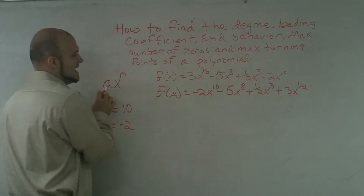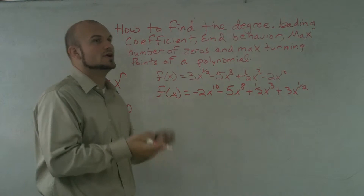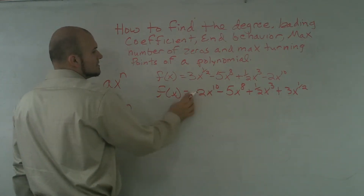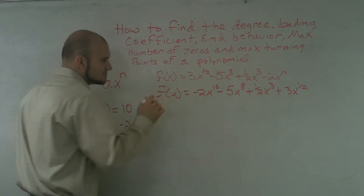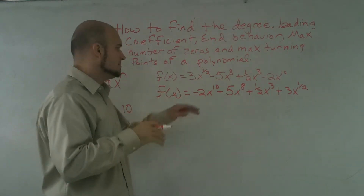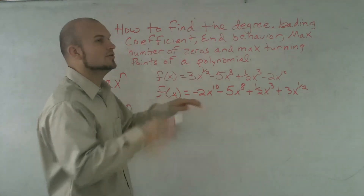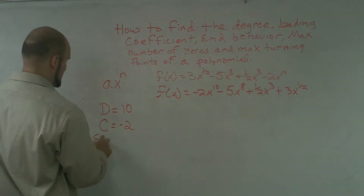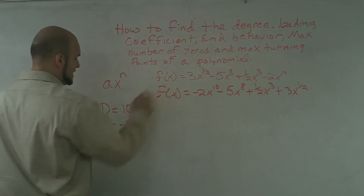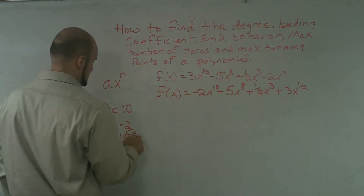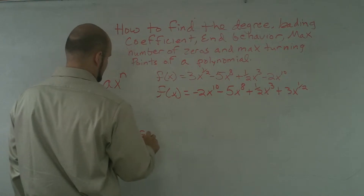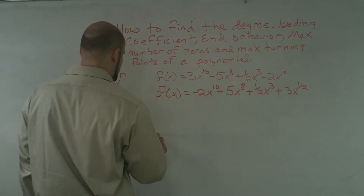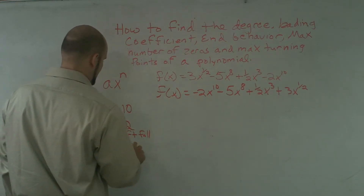Then we look at 'a' to determine whether it opens up or down. Since our 'a' is negative 2, which is less than 0, our polynomial is going to open downward. So for end behavior: the left side falls and the right side falls.